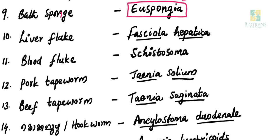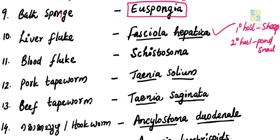Liver fluke is Fasciola hepatica. It is a digenetic parasite. The primary host is sheep, and the secondary host is pond snail. These two hosts complete the life cycle.